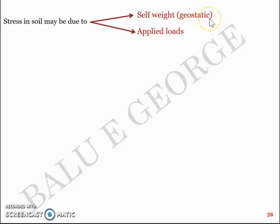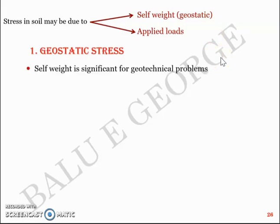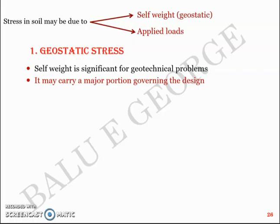Stresses in soil can be due to self-weight — which we call geostatic stresses — or due to applied loads. Geostatic stress is quite important because self-weight is significant for geotechnical problems and may carry a major portion of the load governing the design. For example, in a slope stability problem, the geostatic stress or self-weight is the most predominant load. There's no overburden stress from foundations — the predominant load is the self-weight of the soil, perhaps augmented by water pressure.